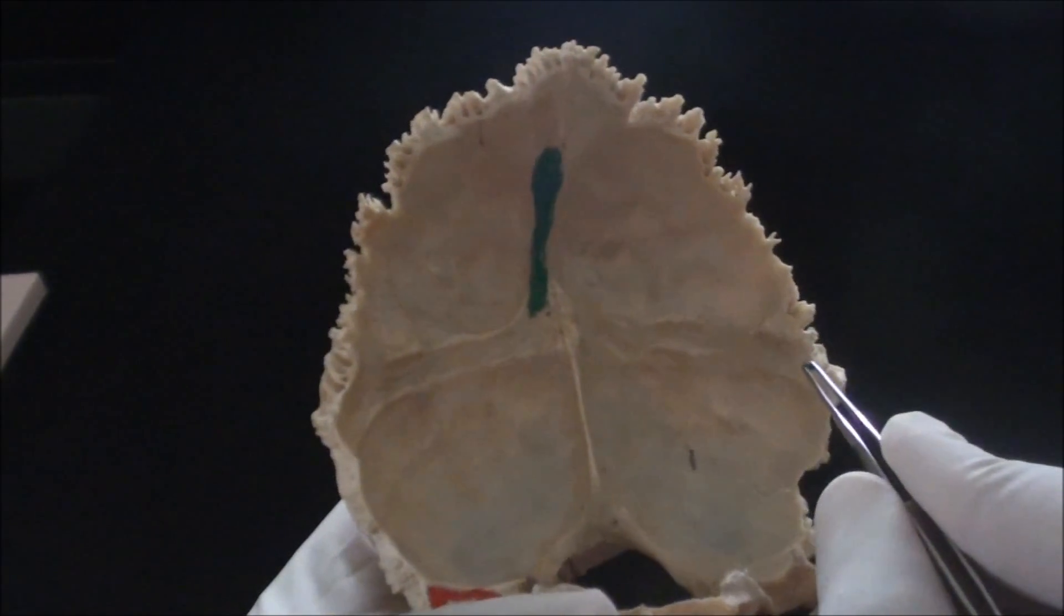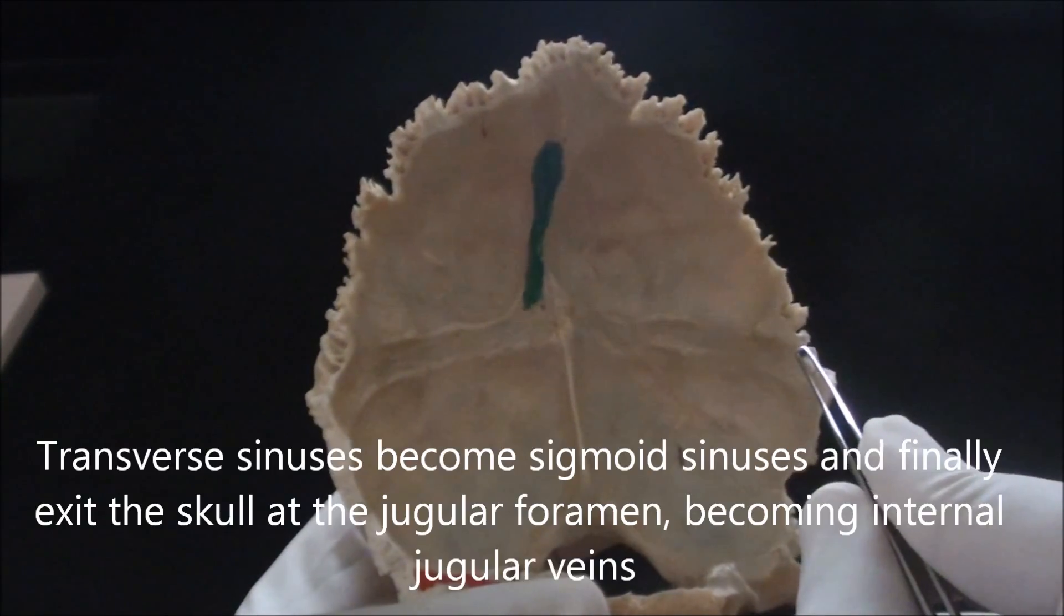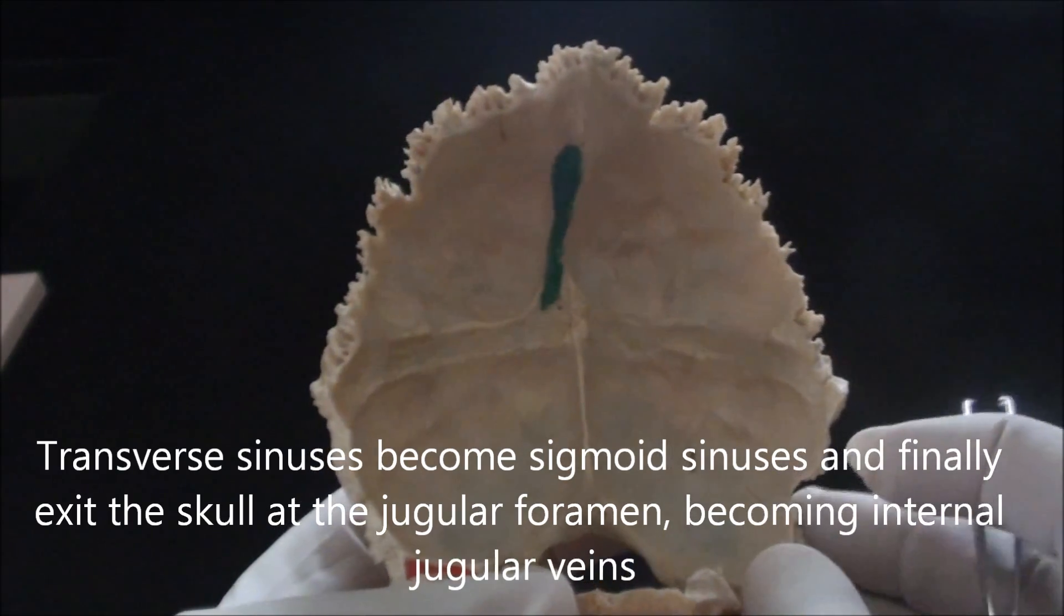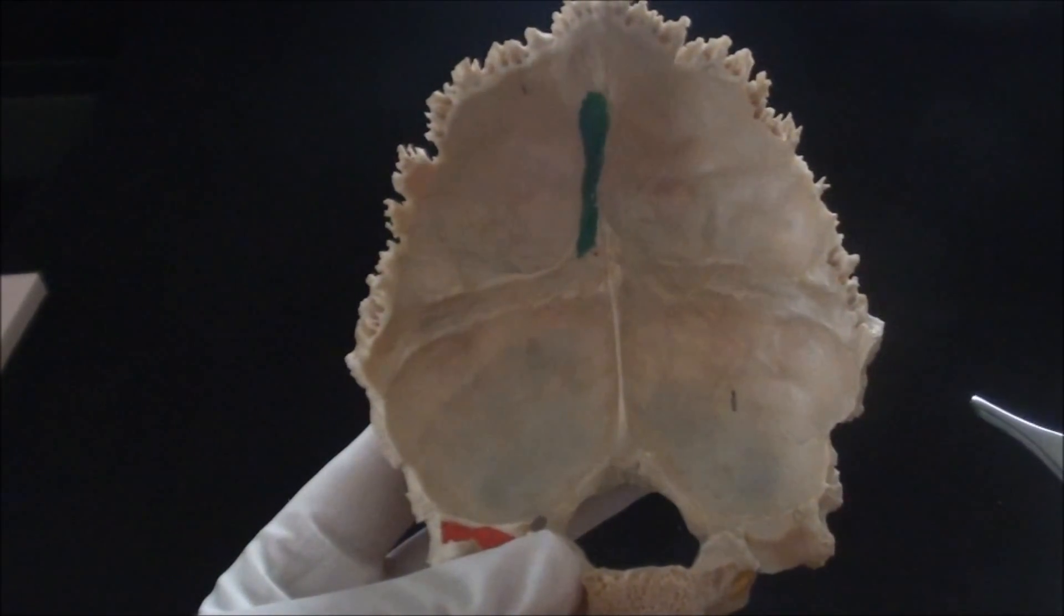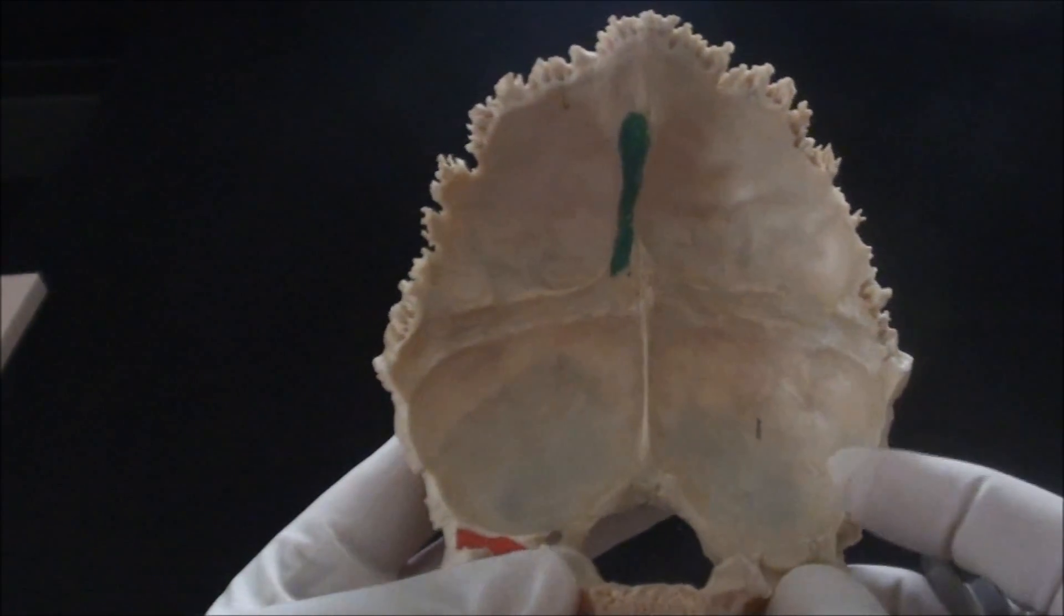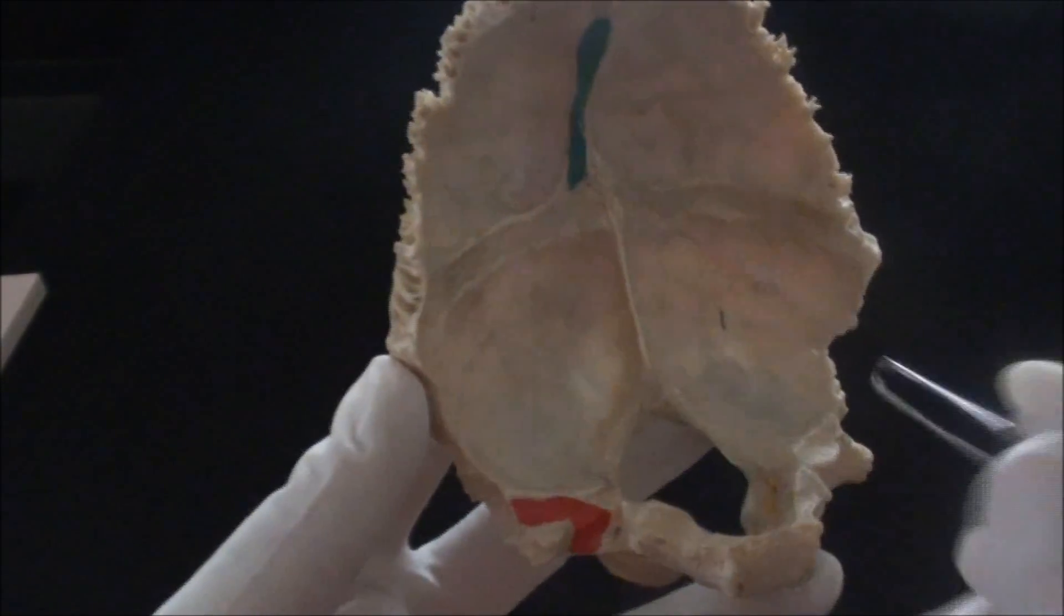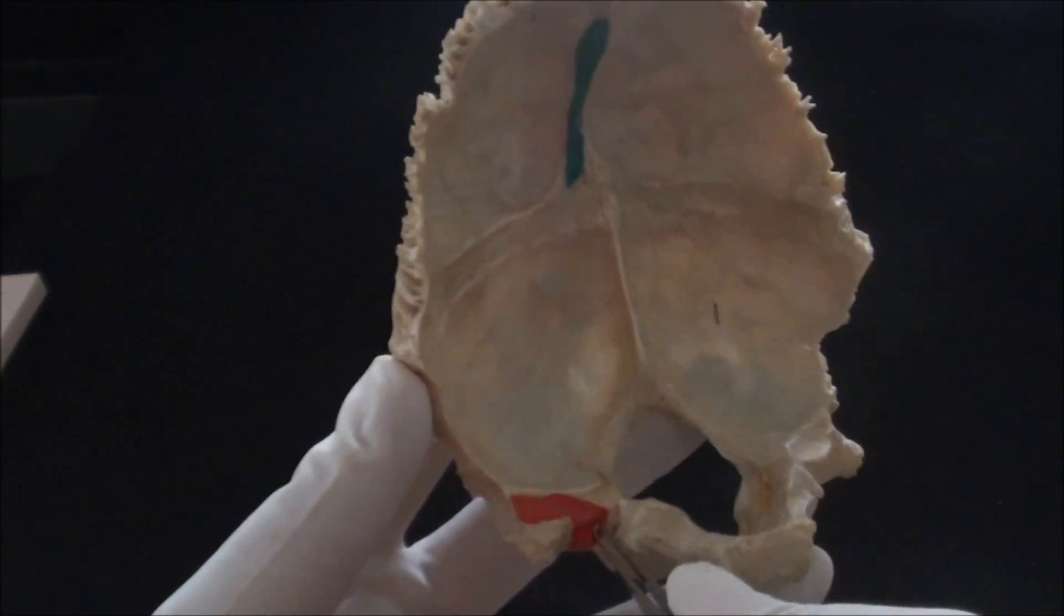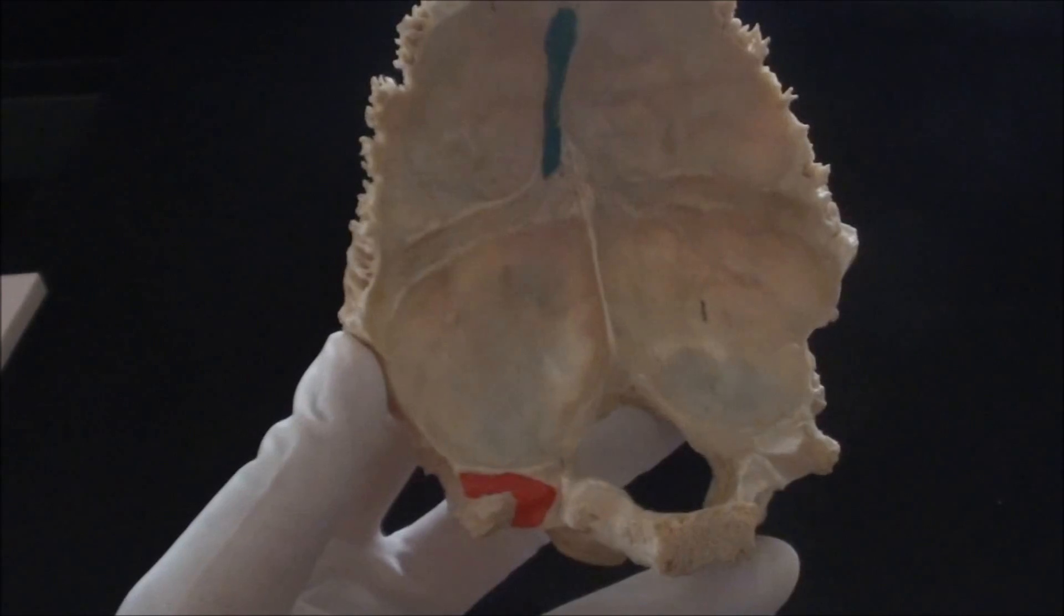As the transverse sinus will reach here and hit into pyramidal part of the temporal bone, they would be forced to take another diversion and to become the sigmoid sinus, that keeps moving in an inferior direction until they finally reach the opening, which is the jugular foramen at the base of the skull. At that point, the sigmoid sinus will quickly undergo another change and will become the internal jugular vein, which exits the skull. The red color detail on the right side of the bone is practically one half of the jugular foramen, because it is a joint venture between the occipital bone and the temporal bone.